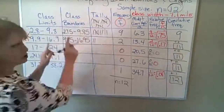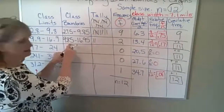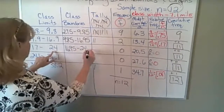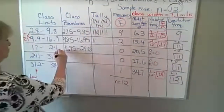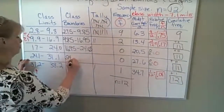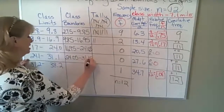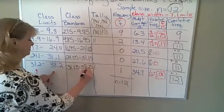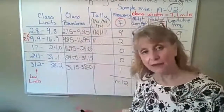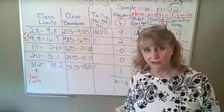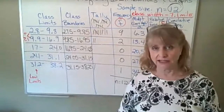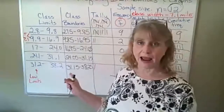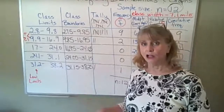If the class limits had been whole numbers, I would have only added and subtracted five tenths. So basically it's like going back five and forward five. The next class starts at 9.85 and ends at 16.95. With boundaries, there are no gaps — where one ends, the next one begins. Continuing: 16.95 to 24.05, 24.05 to 31.15, and 31.15 to 38.25. If you had trouble understanding that, you can click 'Help me solve this,' view an example, watch the video, or look in the book and the PowerPoint for section 2.1.